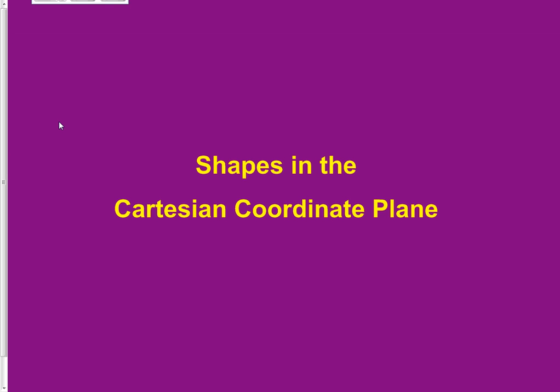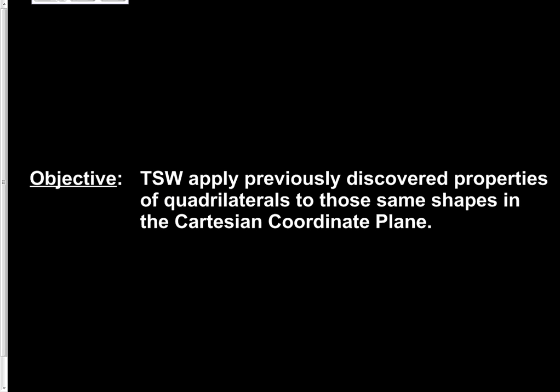Hello, Geometry students. I appreciate you finding time to get your notes taken care of. Today we're going to be looking at the last section leading into the Unit 6 test, and the discussion for today is going to be about shapes in the Cartesian coordinate plane. Copy down your title for your notes as well as the objective: a student will apply previously discovered properties of quadrilaterals to those same shapes in the Cartesian coordinate plane.